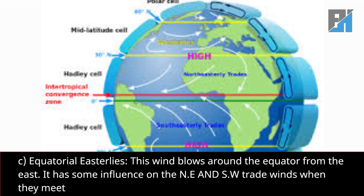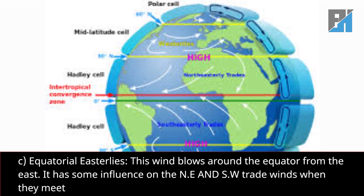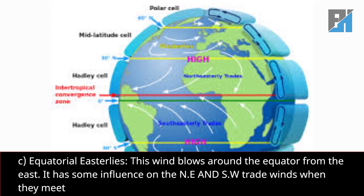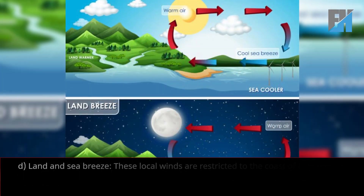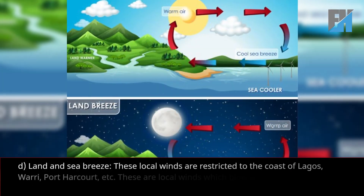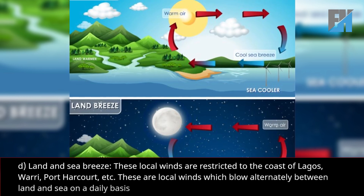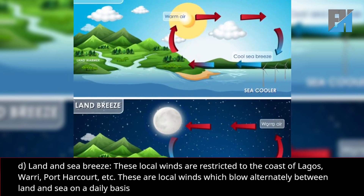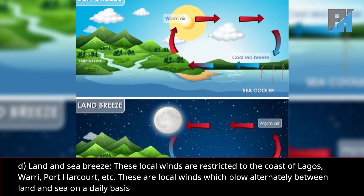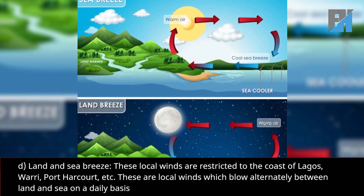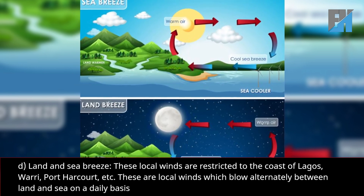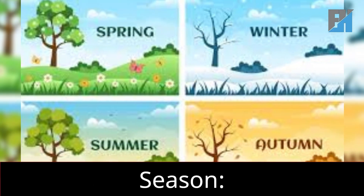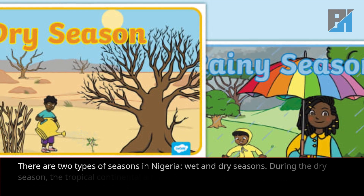Third, the equatorial easterlies. This wind blows around the equator from the east and has some influence on the Northeast and Southwest trade winds when they meet. Fourth, land and sea breezes. These local winds are restricted to the coast of Lagos, Warri, Port Harcourt, etc. They are local winds which blow alternately between land and sea on a daily basis.